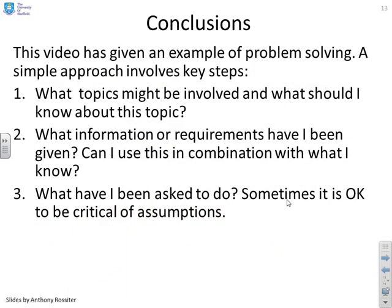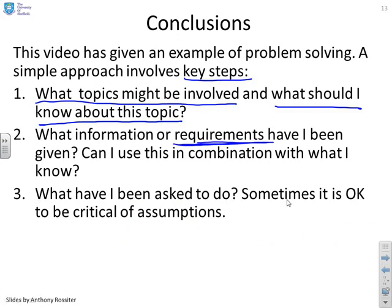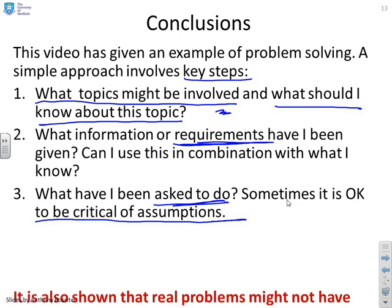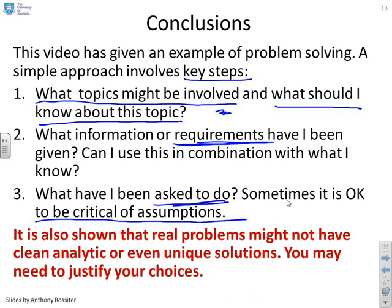So what have we done? We've given an example of problem solving and we've demonstrated a simple approach, which involves a few key steps. First, ask what topics might be involved and ask what you know about that topic. And you see, that's what we did first. Then look at the requirements you've been given and say, how does the knowledge I've got from step one link to these requirements? And can I use these two in combination? And finally, ask what you've been asked to do. And remember, this is key all the time, sometimes it's critical, it's OK to be critical of assumptions. I've made some assumptions in this video and you might say, well, I think that was a bit weak. You could do better there. Well, if you're saying that, then you're beginning to understand how to be an engineer and how to solve problems. And finally, we've reminded the students many times in these videos that real problems might not have clean analytic or even unique solutions. And ultimately, you have to justify what you do.